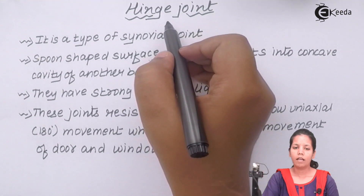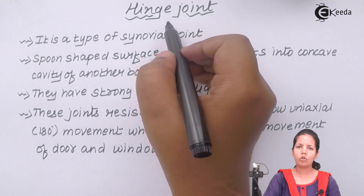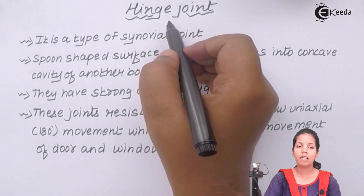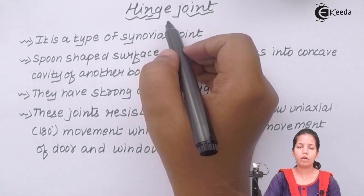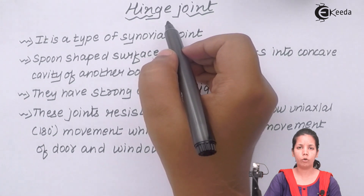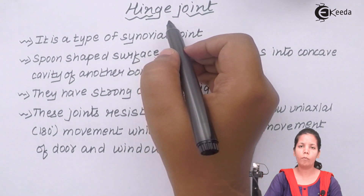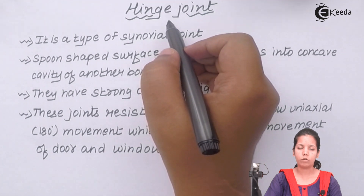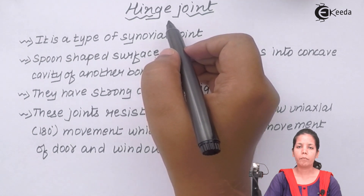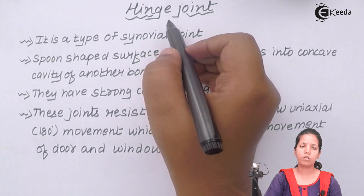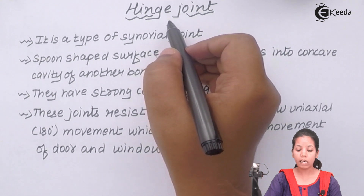Hinge joint basically represents the attachment or hinge present in your door latch that allows the to-and-fro movement of the door in your house. Hinge joints are very similar to that. They are present in your elbow region as well as in your knee joints.